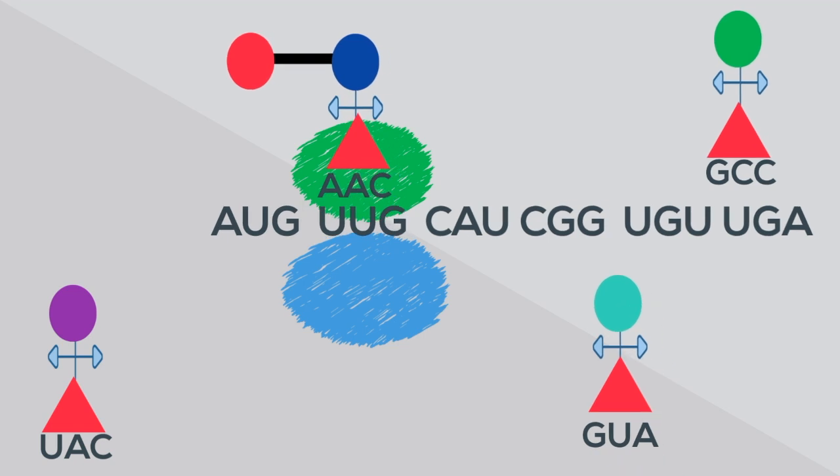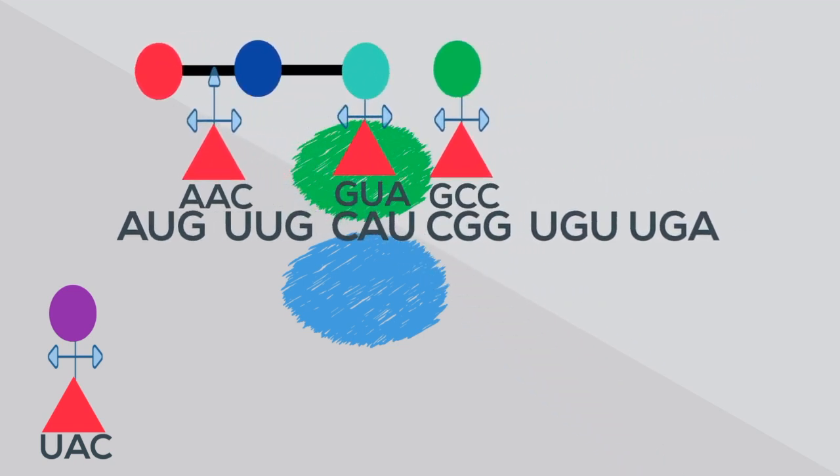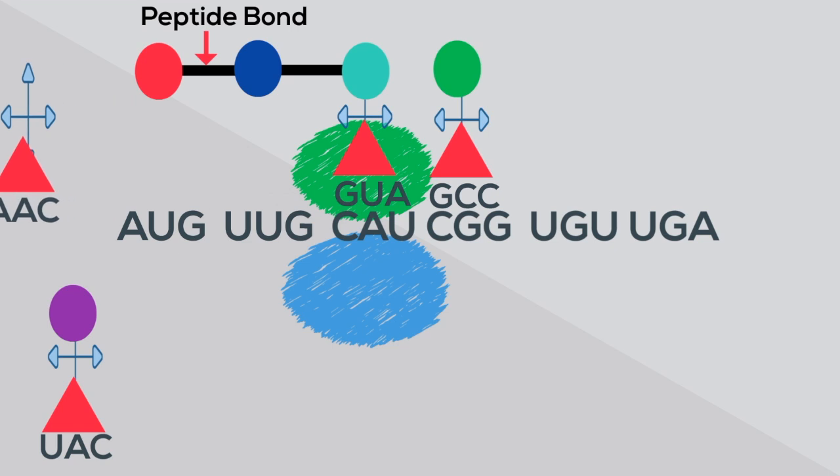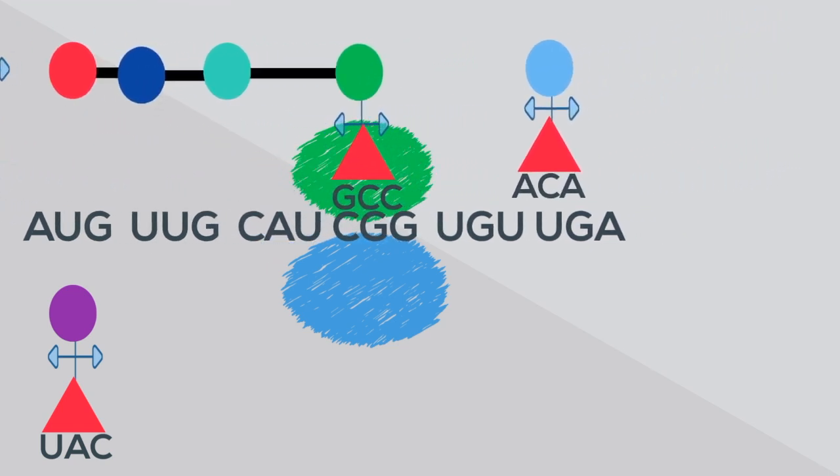As a new transfer RNA moves to the mRNA, the amino acids bond together with a peptide bond. And a string of amino acids begins to form called a polypeptide chain.